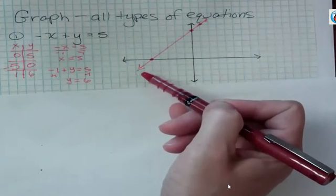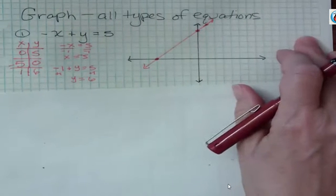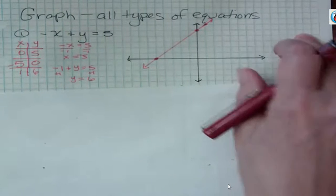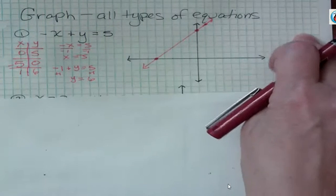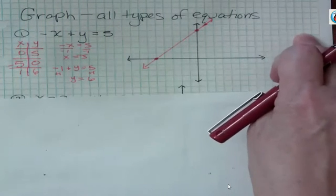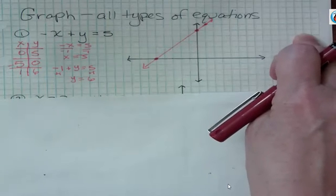All the points on this line are solutions to that equation. That's what the genius of Descartes was, to figure out a way to display all of the solutions, because there's an infinite number. We can't list them, but we can give a picture and say, hey, if it's a solution, it falls on this line.